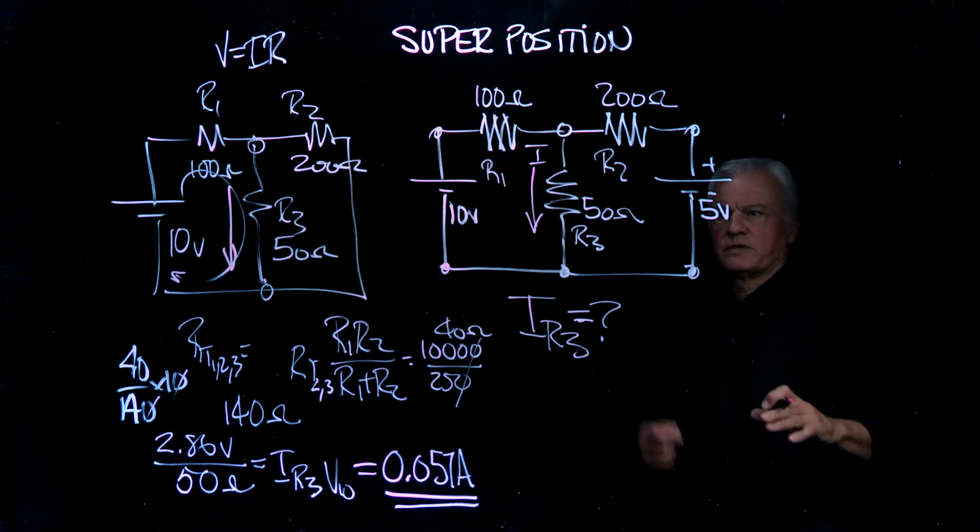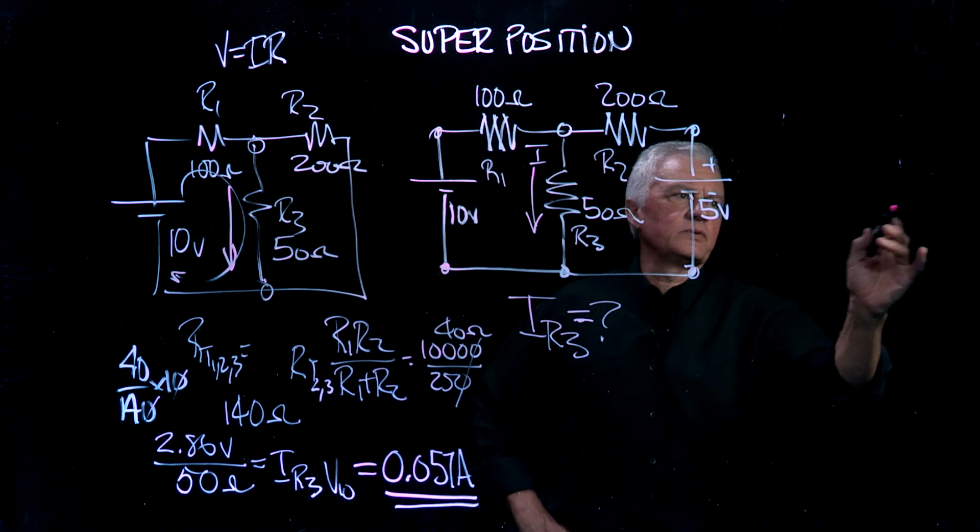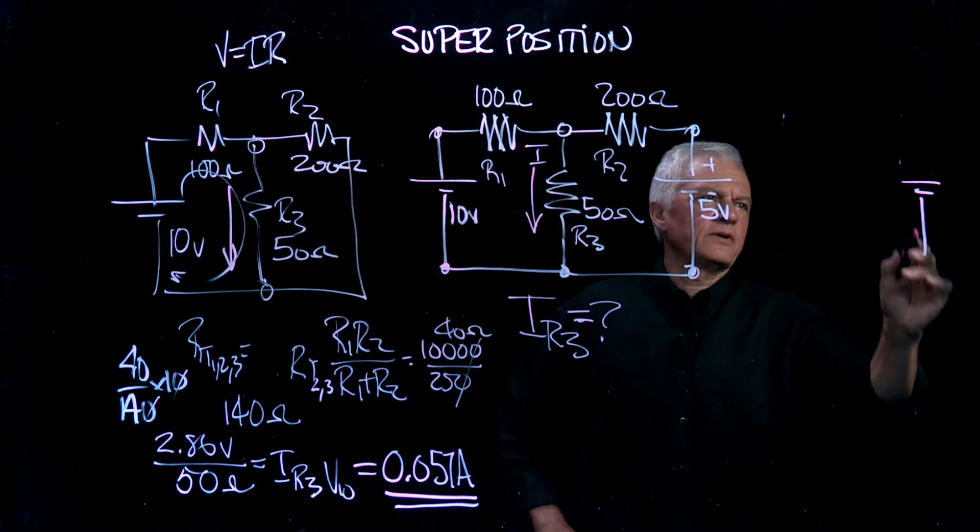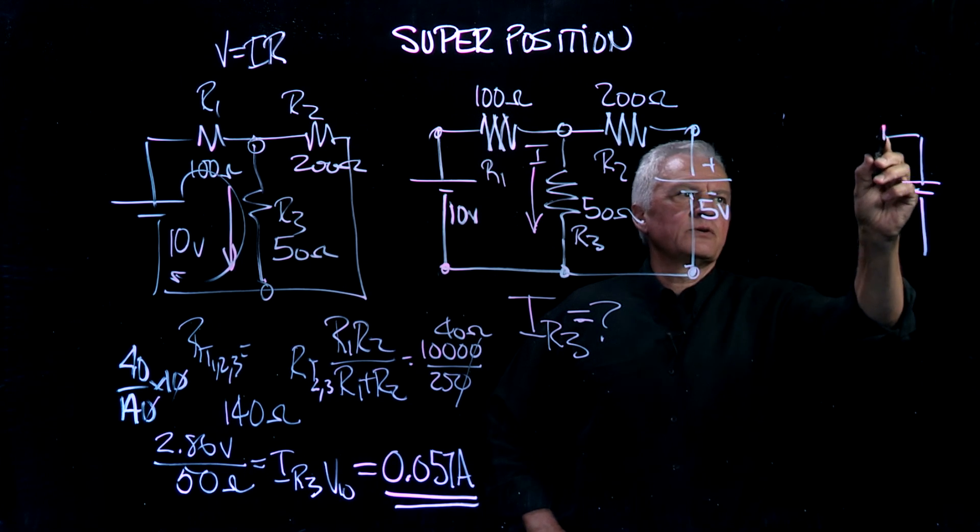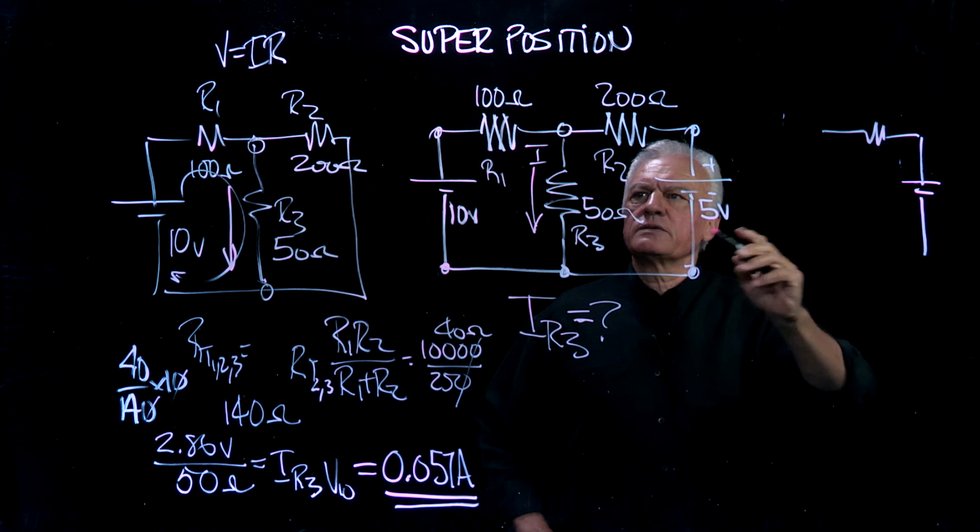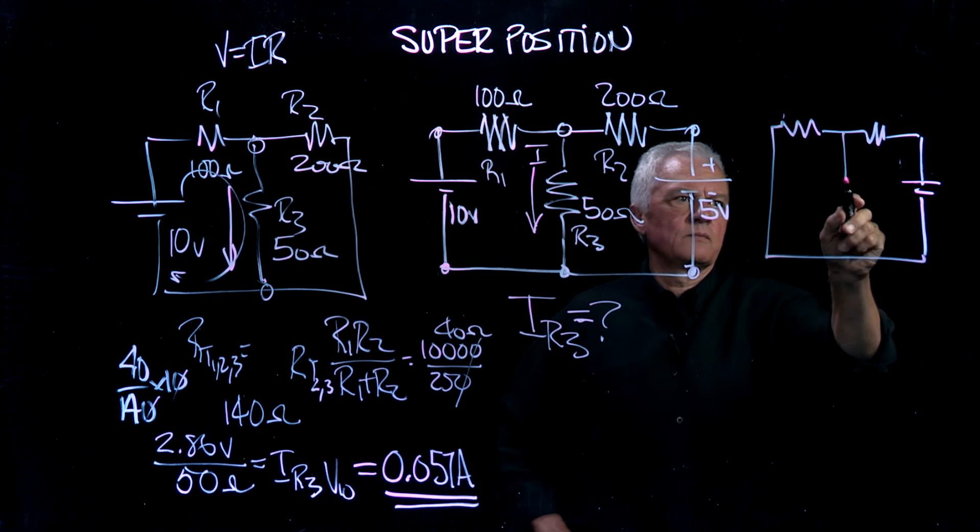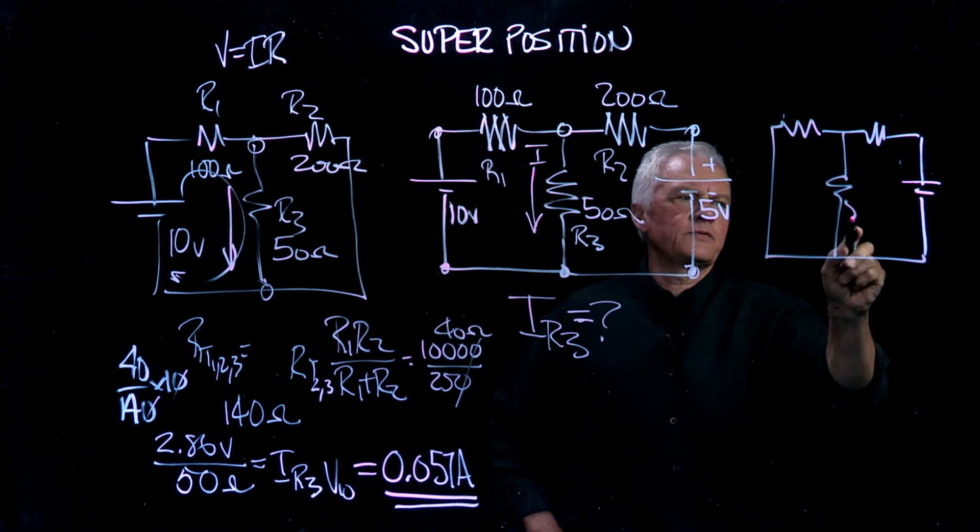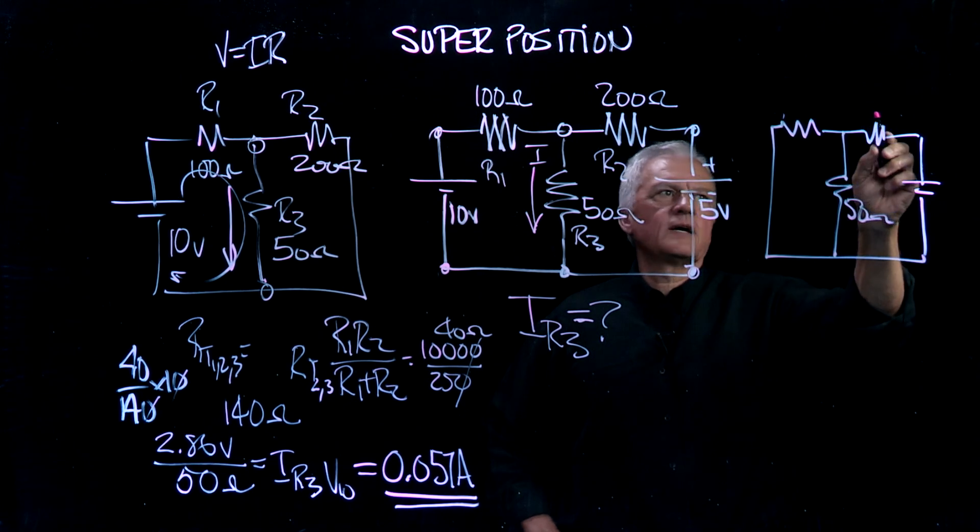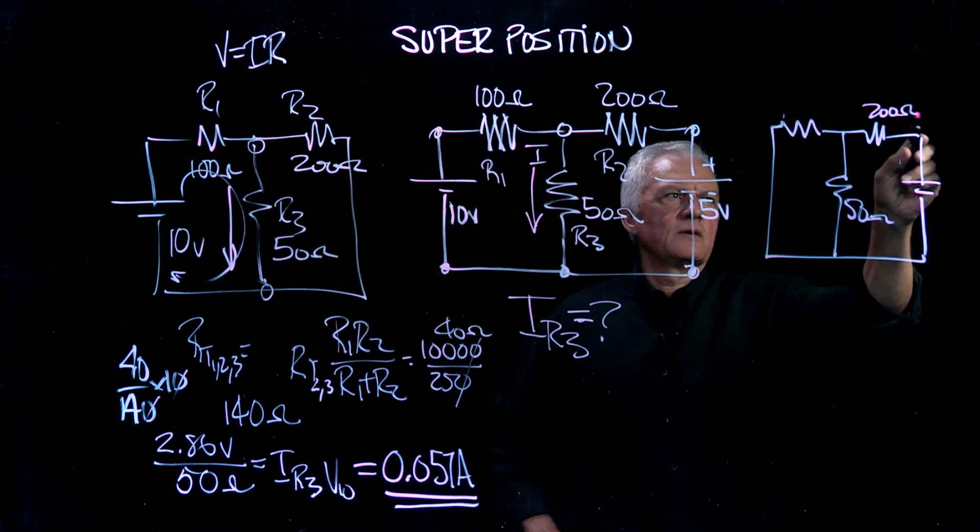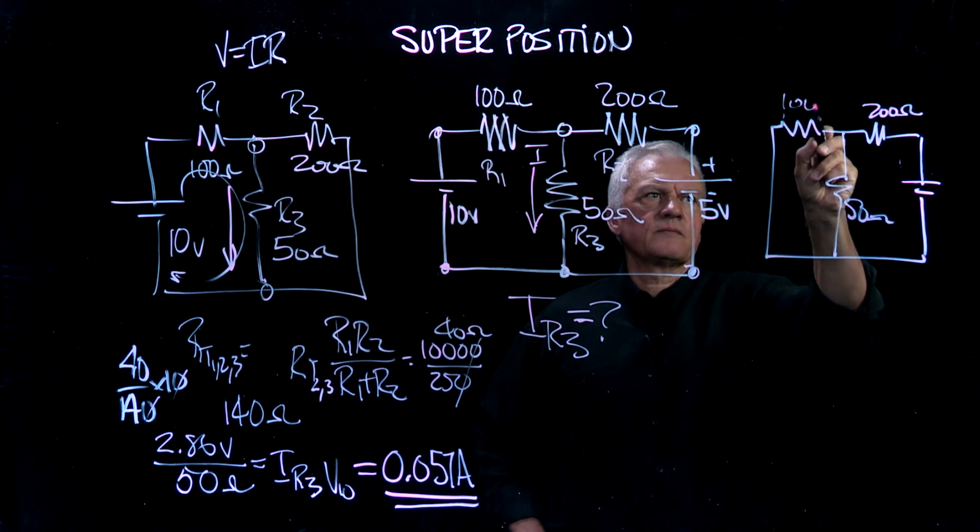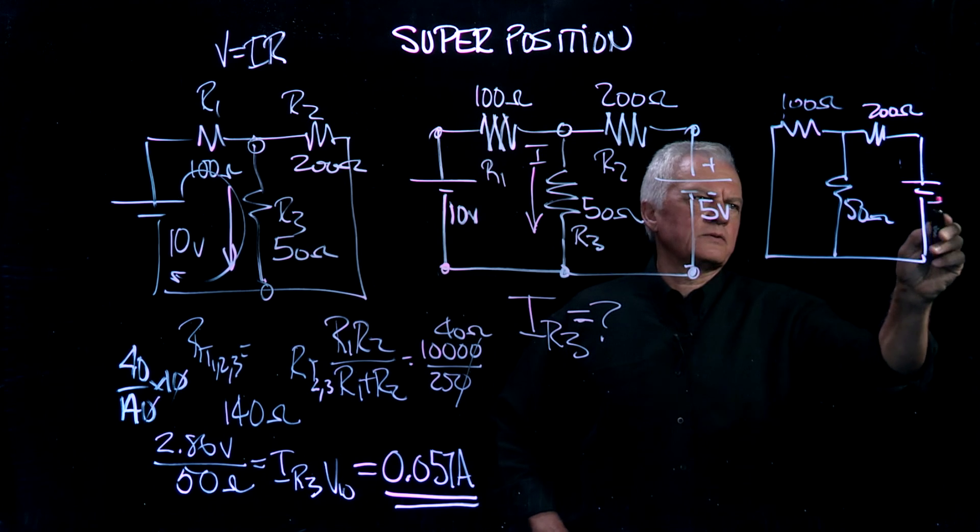We have to do the same thing from this side now, so we will end up doing a 5 volt battery into a 200 ohm resistor, shorting out the 10 volt battery. So we've got 50, we've got 200, we've got 100, and we've got 5 volts.